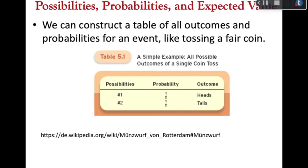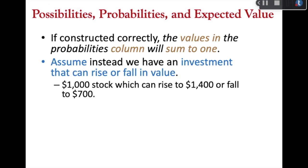Remember: the values in the probability column must sum to one — all possibilities together must be exactly 100%, not more and not less. Now let's translate that simple case of heads and tails to an investment.